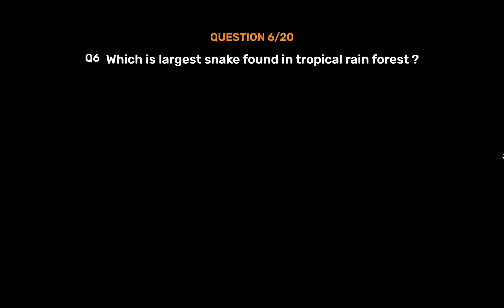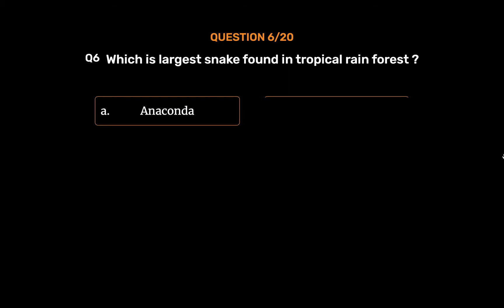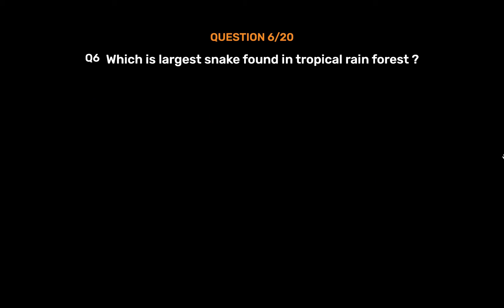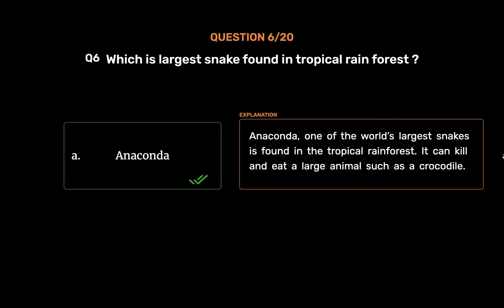Question number 6: Which is the largest snake found in tropical rainforest? Option A: Anaconda. Option B: Black cobra. Option C: Two-mouthed snake. Option D: None of these. The correct answer is Option A: Anaconda. One of the world's largest snakes is found in the tropical rainforest. It can kill and eat a large animal such as a crocodile.